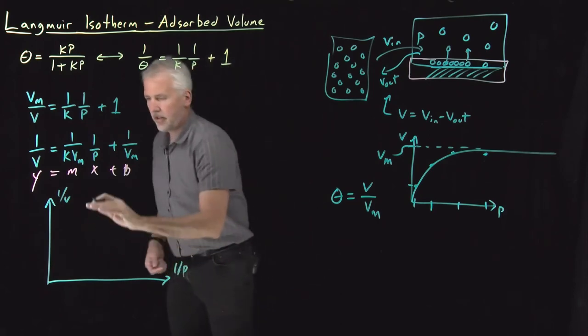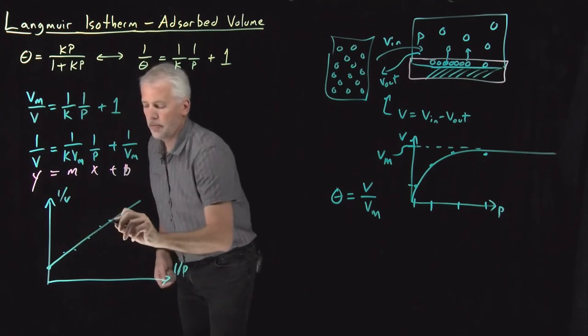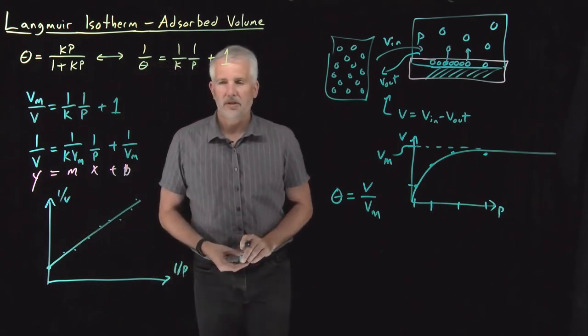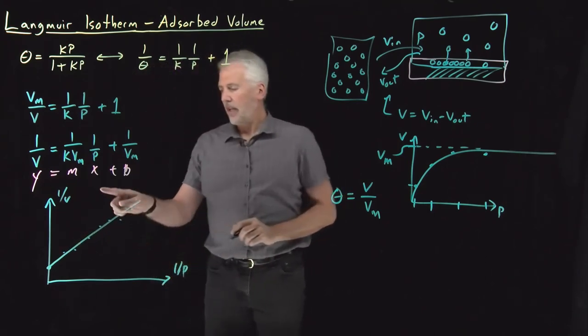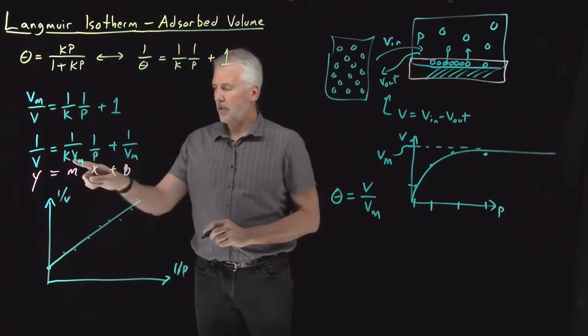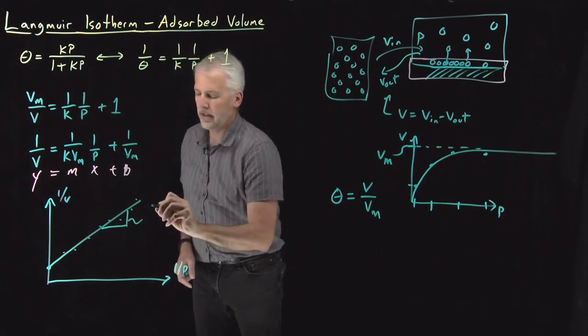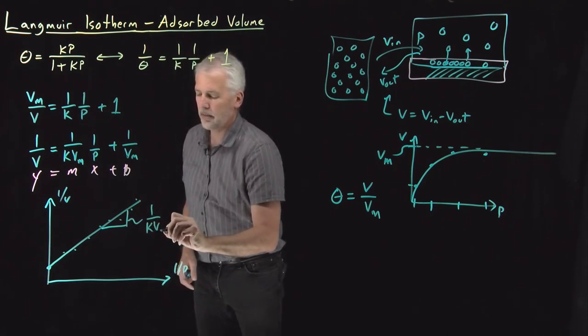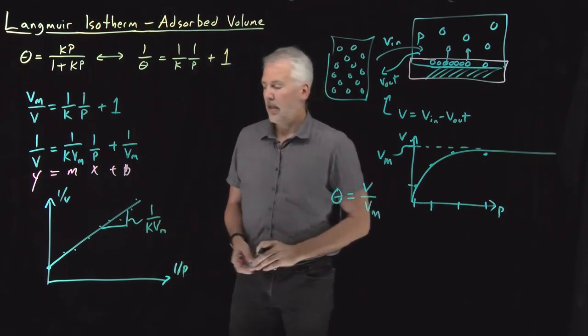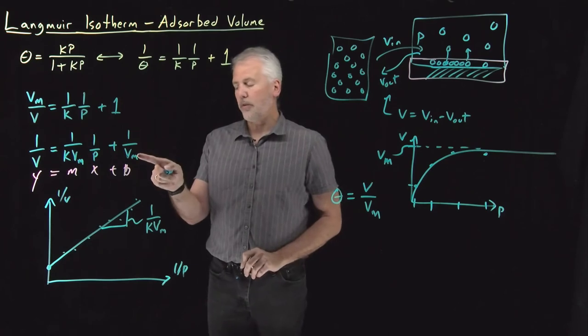Again, I'll get a straight line. My data will be on or close to that straight line. Now notice that we have a slope and we have an intercept. The slope of this curve is one over K times the monolayer volume or the maximum volume. The intercept now tells us something. The intercept is one over Vm.